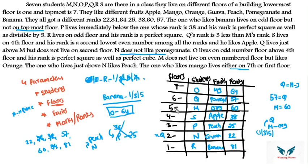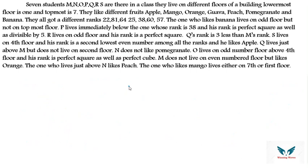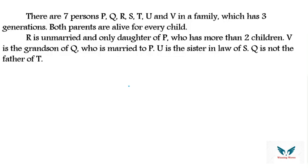Next question is from blood relations. There are seven persons P, Q, R, S, T, U, V in a family with three generations. Both parents are alive for every child. R is unmarried and is the only daughter of P, who has more than two children. V is the grandson of Q, who is married to P.